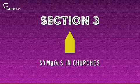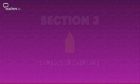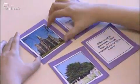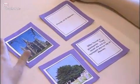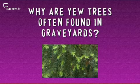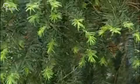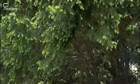Our class visited a local church to look for symbols. Why is the church spire often pointed? The tower points upwards toward where heaven is meant to be — it reminds Christians of their focus toward heaven. Why are yew trees often found in graveyards? The leaves of a yew tree never die; they're always green. This represents that we will always be alive even if we die on earth. Yew trees help represent eternal life in heaven because they never die.